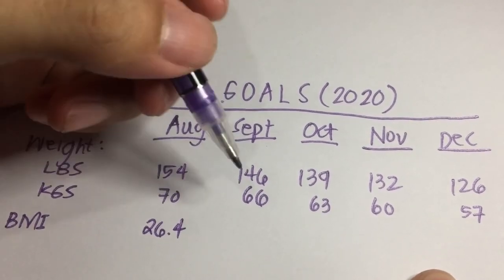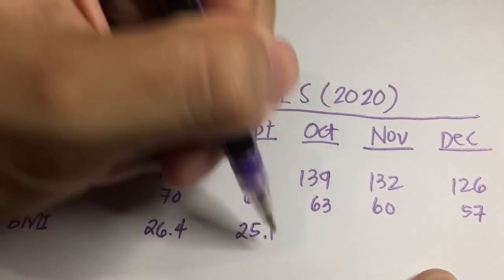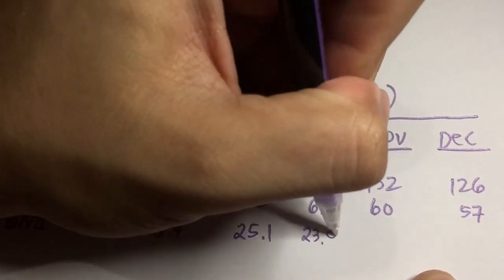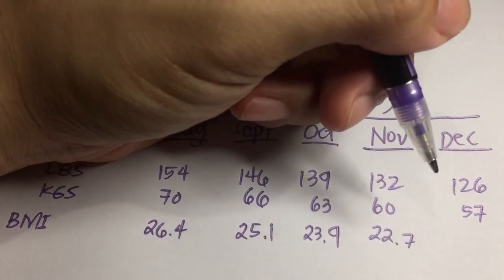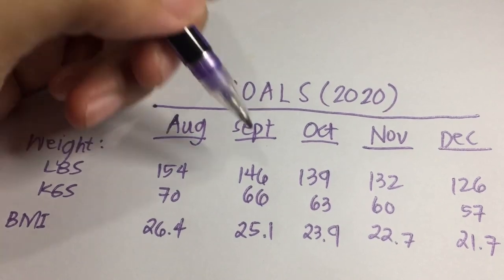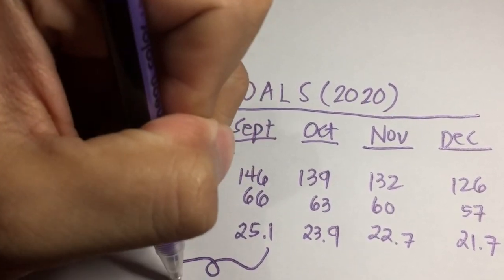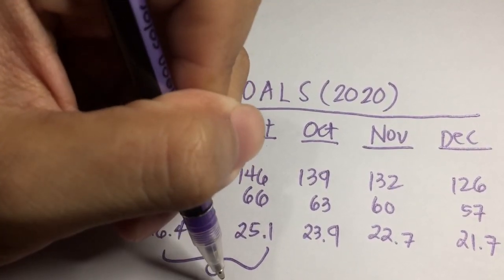And of course, as a source of motivation, I would treat myself to a cheap meal if and only if I would meet my goal. And that's not even the monthly. I would weigh myself on a weekly basis. If I meet my weekly goal, then I'll treat myself to a cheap meal.